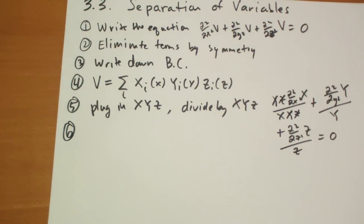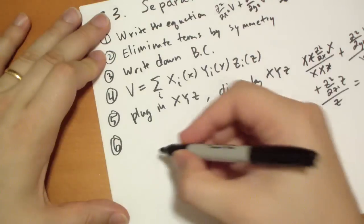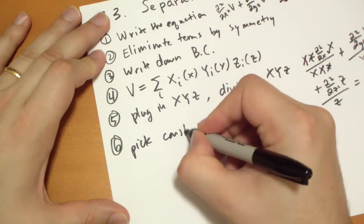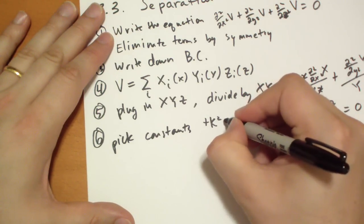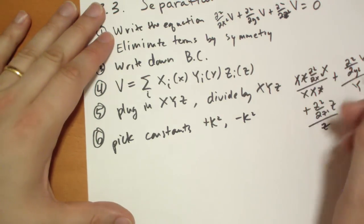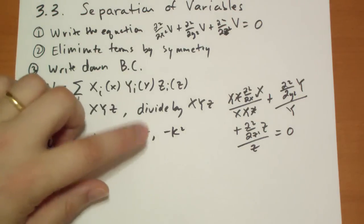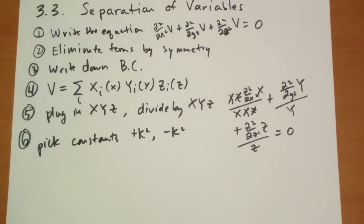So now we have to pick constants. The constants are going to basically be something like k² or -k². Something squared, because you're taking the second derivative, so you're going to be applying something twice.